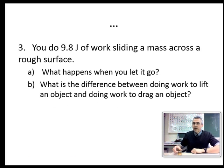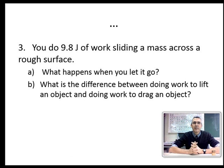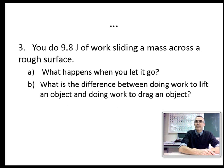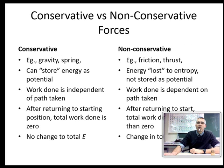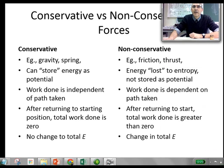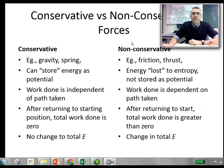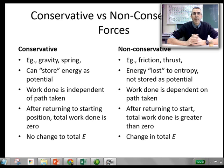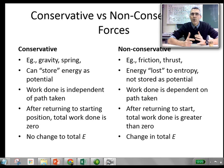If I do 9.8 joules of work sliding this mass across the table, what happens when I let it go? Obviously, nothing happens. The difference between that and lifting it up is that one uses conservative forces and the other non-conservative forces. With conservative forces — things like gravity, springs, and magnets — energy can be stored, whereas with non-conservative forces like friction and thrust, the energy is lost to entropy and is not stored as potential energy.